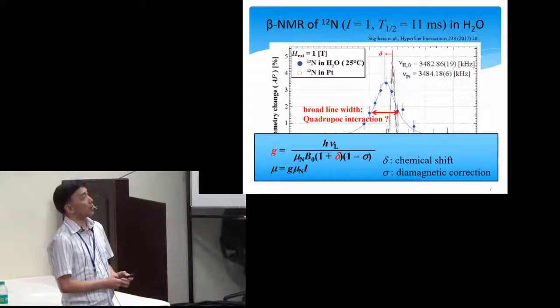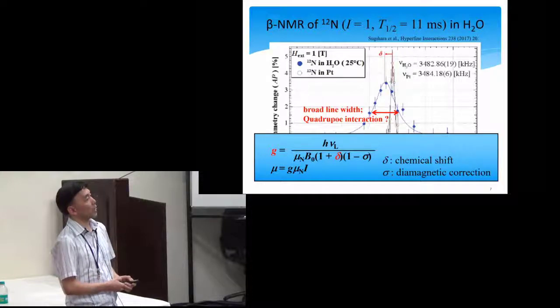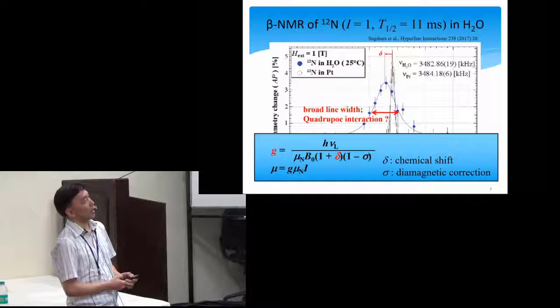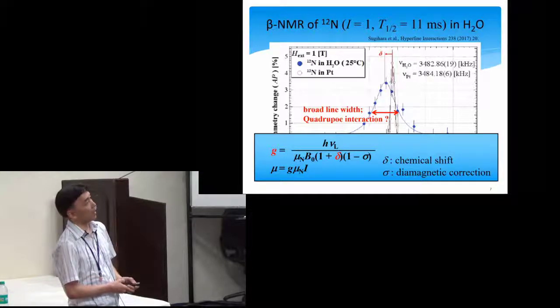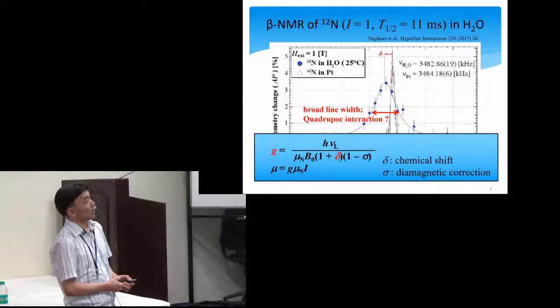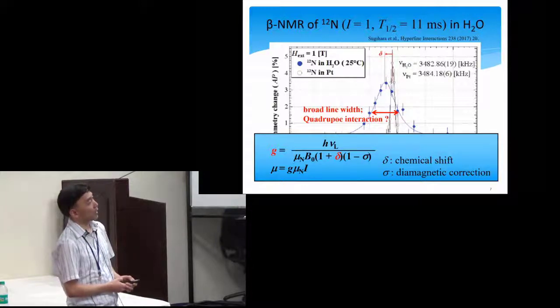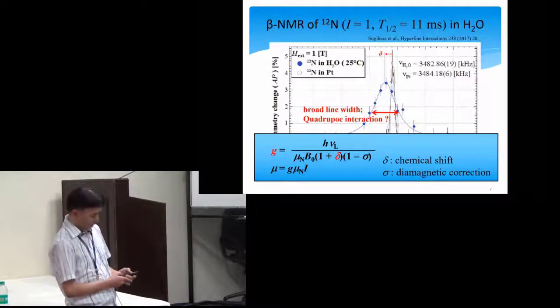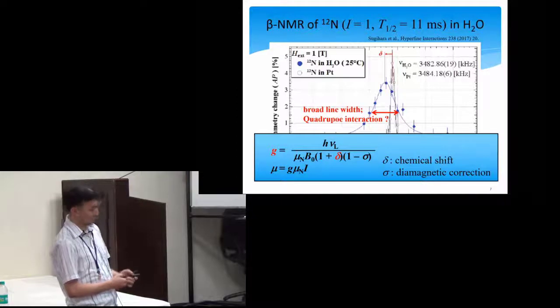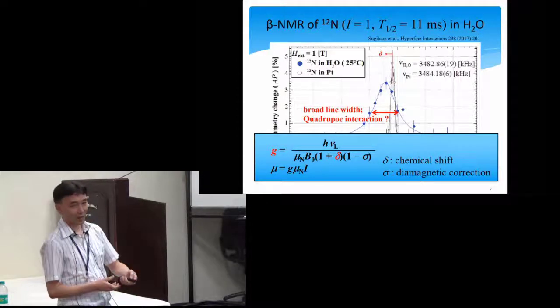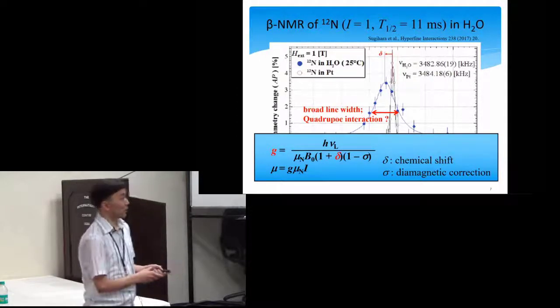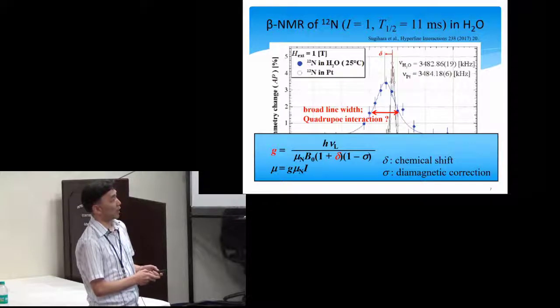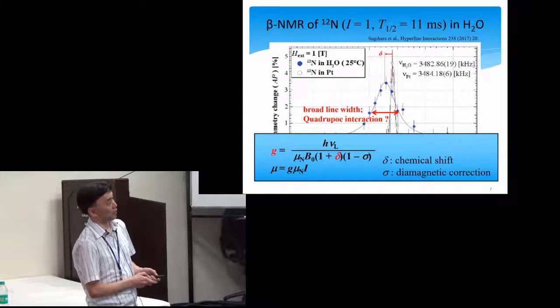So, this is due to the chemical shift, which is different between platinum and in water. From the NMR frequency, we can obtain the relation between the nuclear G-factor and the chemical shift.